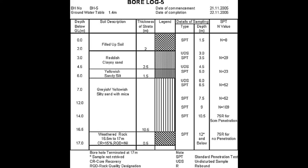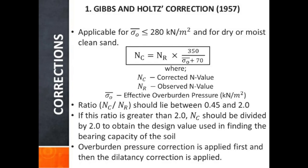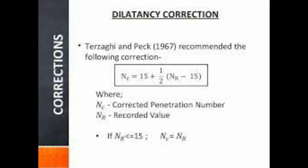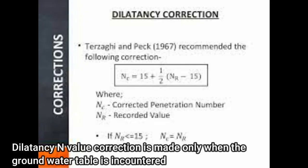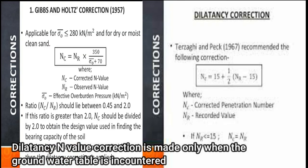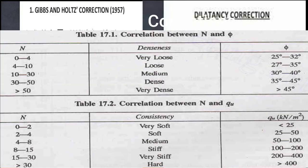The SPT n value obtained in the field for sand have to be corrected before they are used in the empirical correlations and design charts. IS 2131 recommends the field values of n be corrected for two effects: namely, first, the effect of overburden pressure, and second, the effect of dilatancy.